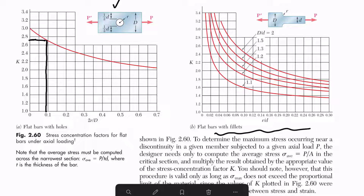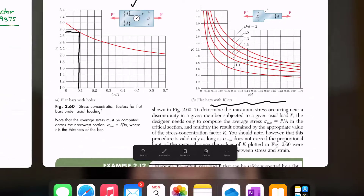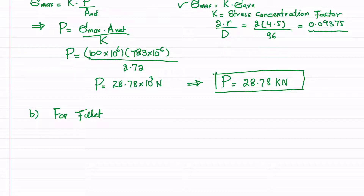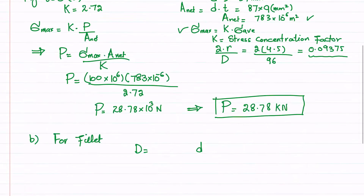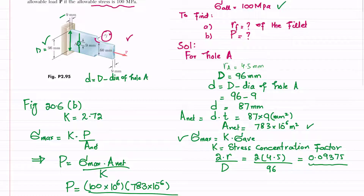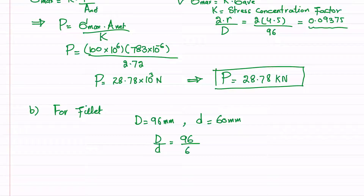For the fillet we need the ratio D over d and r over d. Capital D remains 96 millimeters and the narrower section width d is 60 millimeters. Therefore D over d equals 96 divided by 60, which comes out to 1.60.